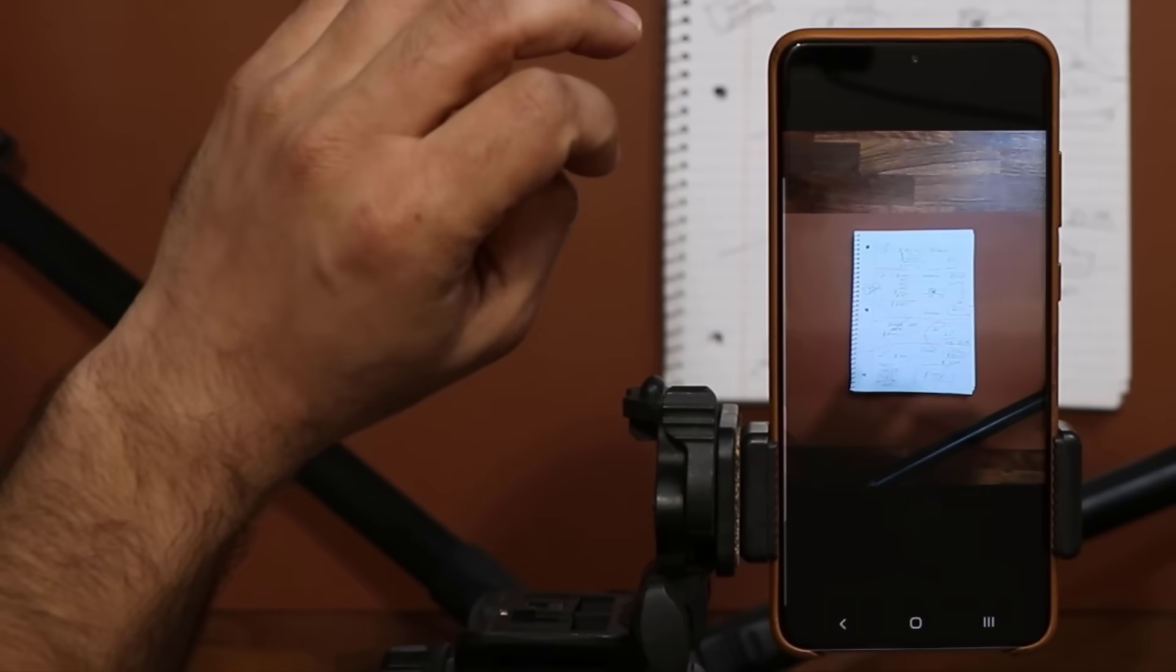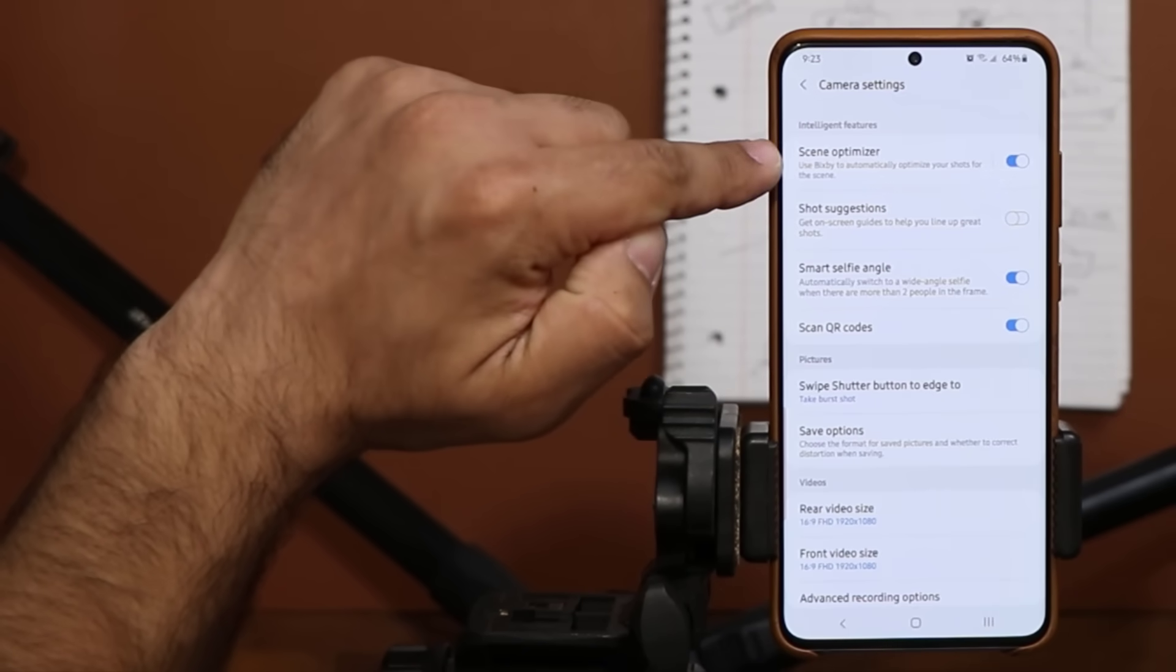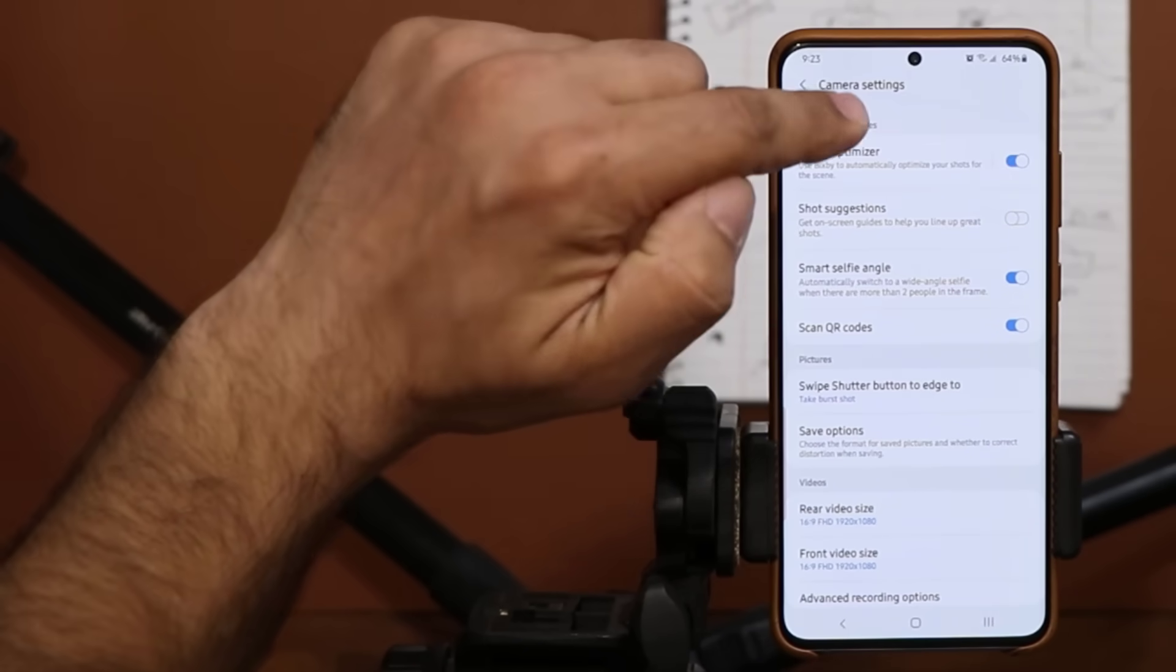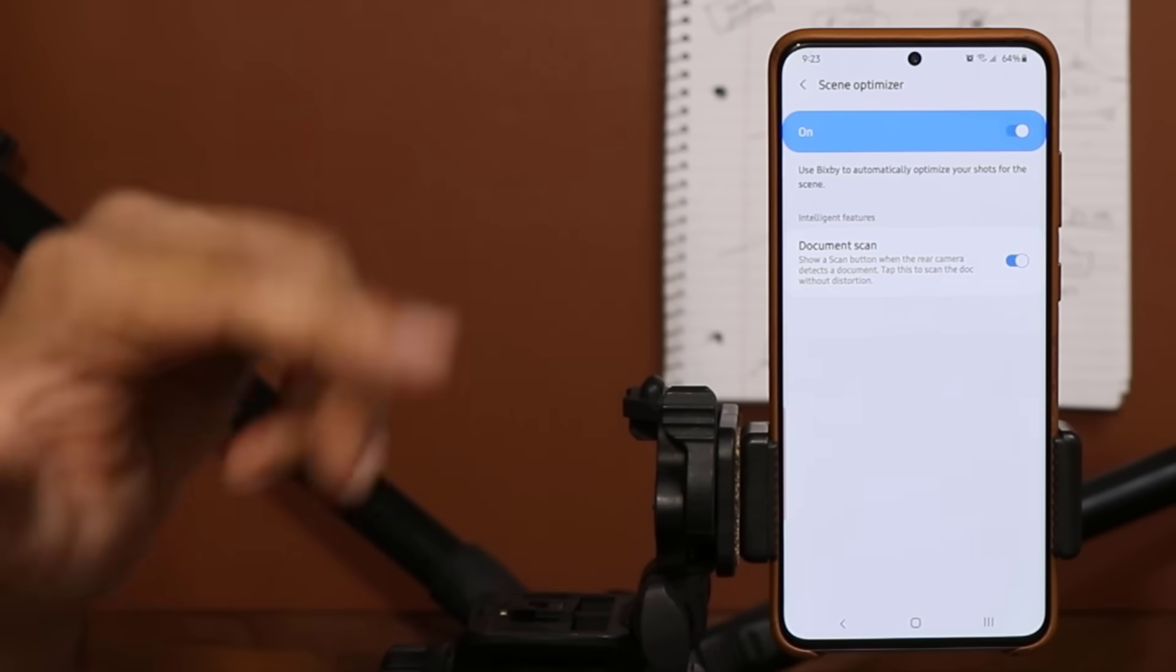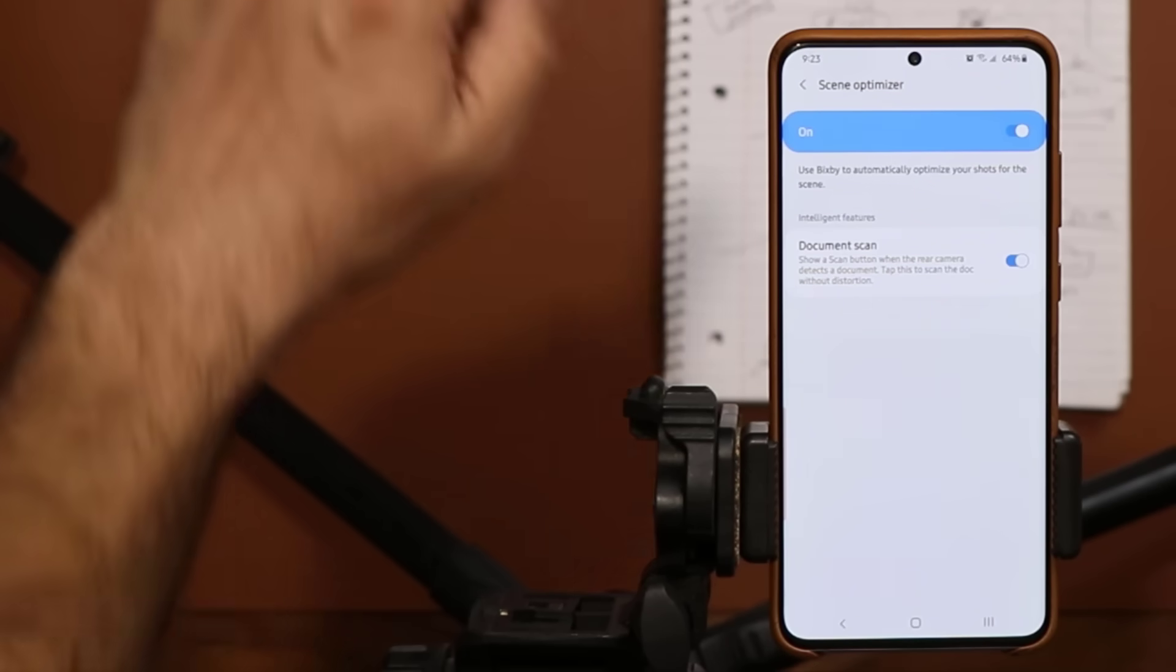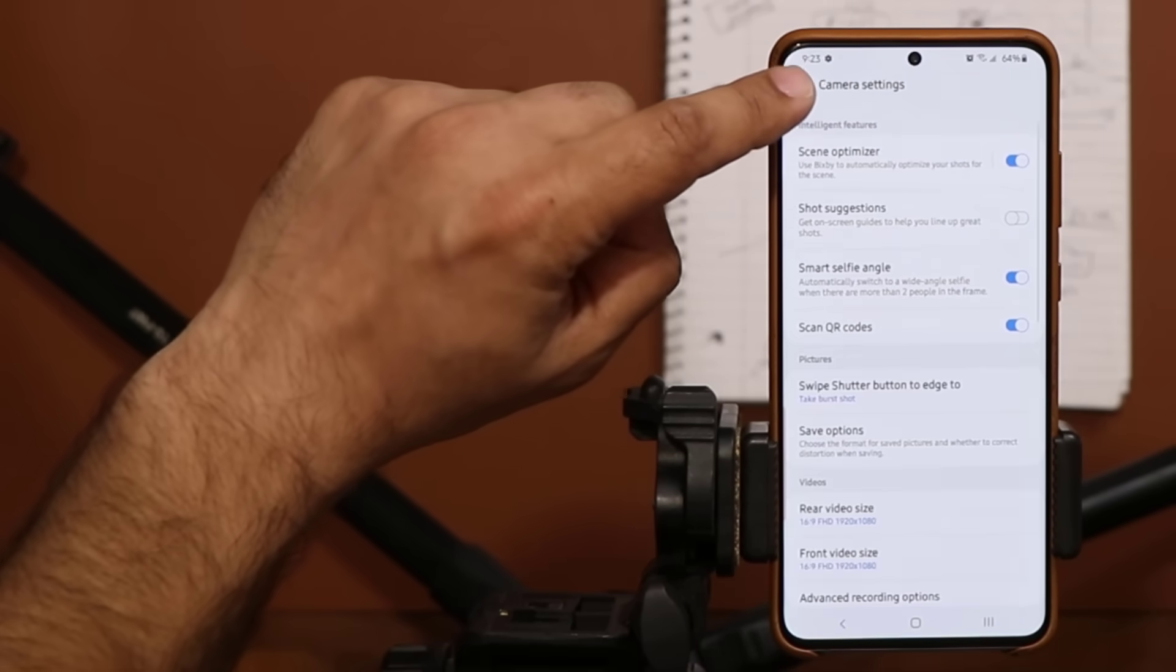You will have to go to the settings. You have to go to the scene optimizer. Make sure it's enabled. Obviously in this case it is. Go inside and make sure document scan is in fact enabled as well which is going to detect the document at the bottom with no problems.